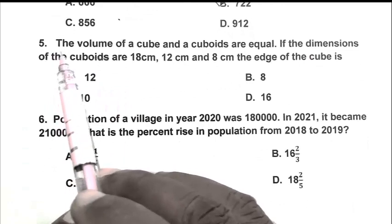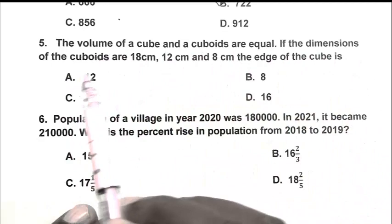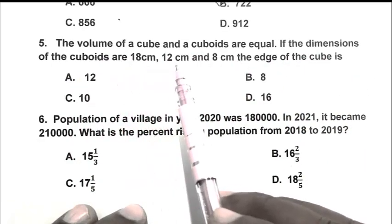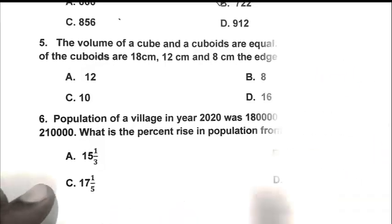So 722. So friend B is the right answer. Question number 5. The volume of a cube and a cuboid are equal. If the dimension of the cuboid are 18 cm, 12 cm and 8 cm, the edge of the cube is.